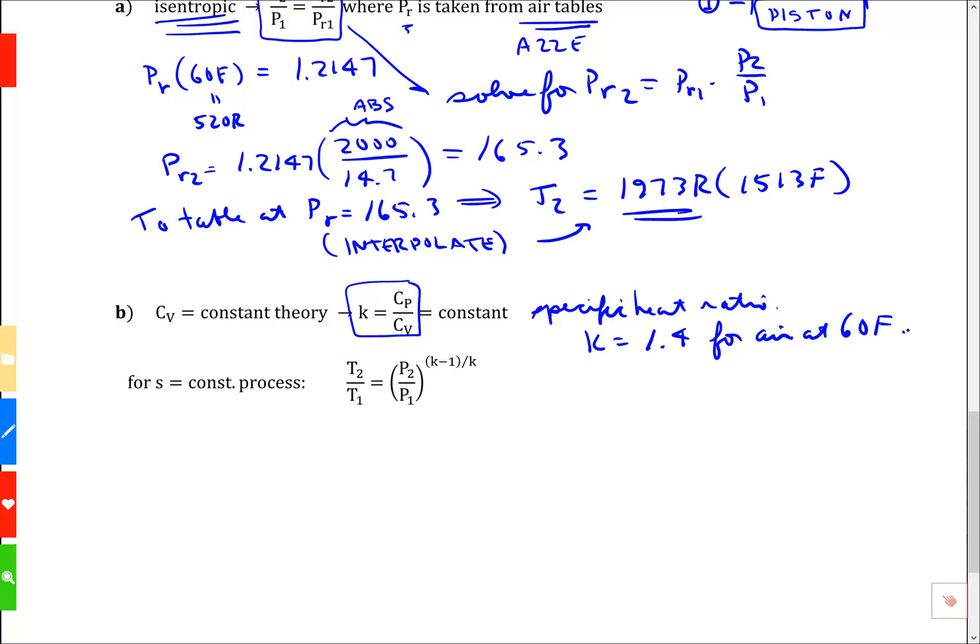For an isentropic process, we have a collection of relationships constructed from ideal gas relations. One of them is the temperature ratio equals the pressure ratio to a power k minus 1 divided by k. So T2 equals T1 times P2 over P1, and the power is k minus 1 divided by k.